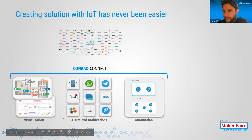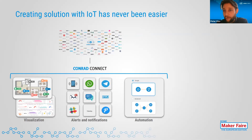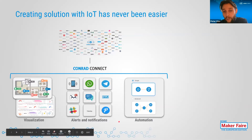We have a lot of different communication tools and services already integrated into the platform. So SMS service, email service, a Telegram service, WhatsApp service, push notification, Slack notification — even automated phone calls you can use to be notified if something goes wrong in your smart home or smart office. And last but not least, you can also build up automation rules.